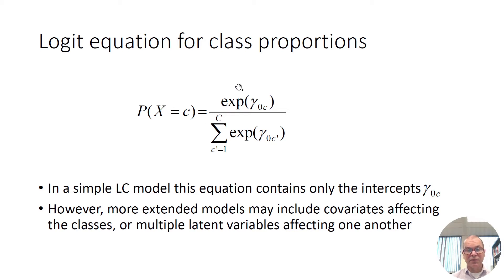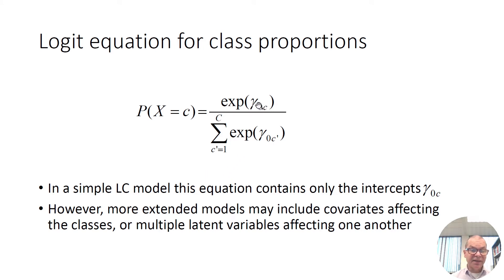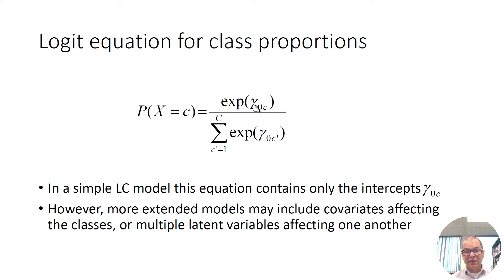This is the simplest model for the latent classes. In more extended models, you may include covariates, so this equation will have not only gamma 0 but also gamma 1 and gamma 2, et cetera, for covariates affecting the classes. It is also possible to include other latent variables in this equation to predict one latent variable by another. This is a look ahead to more expanded topics for later videos. Let us go into more detail using a numerical example.